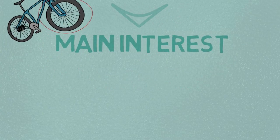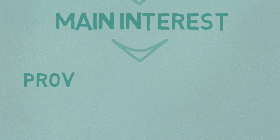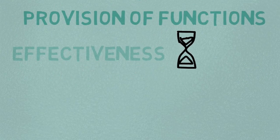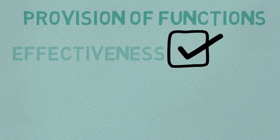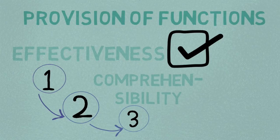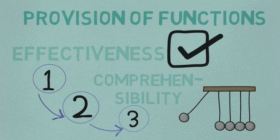Does the prototype provide all the functions that the user wants, for example effectiveness? Is the implementation of the functions such that the user can perform his tasks efficiently? Comprehensibility: Is it clear to the user which interaction steps have to be carried out in order to use a function? Are the consequences of an action comprehensible and understandable for the user?